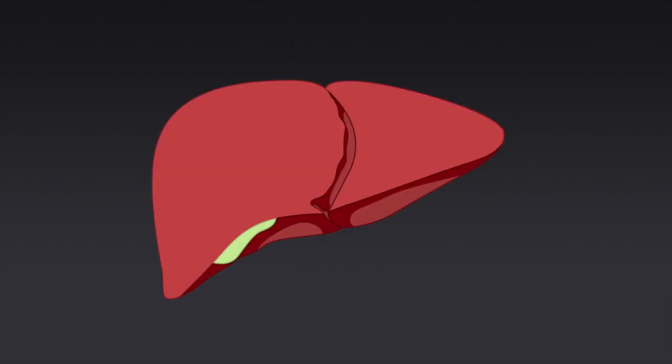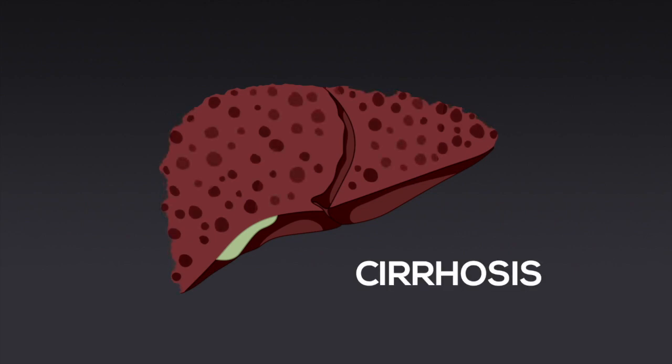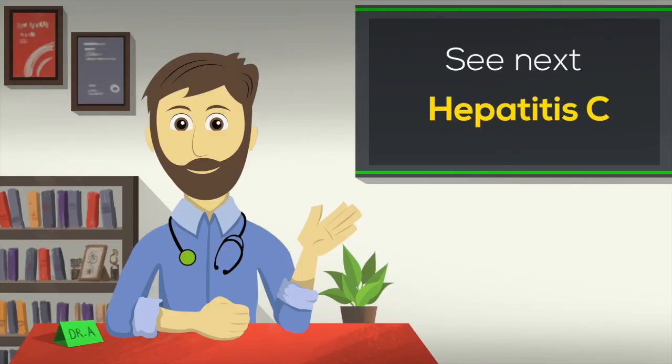Some diseases cause slow damage to the liver that happens over months and years. It can go unnoticed for a long time and manifest when a lot of liver has been permanently damaged or scarred. This condition is called cirrhosis. See our video about hepatitis C to learn about cirrhosis.